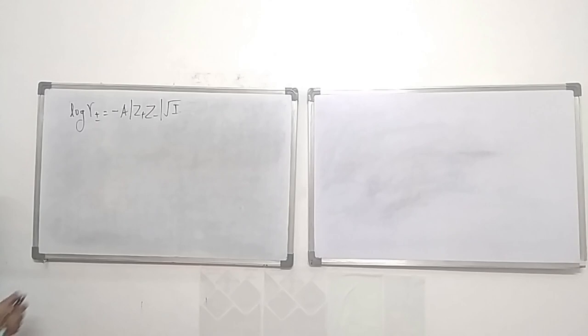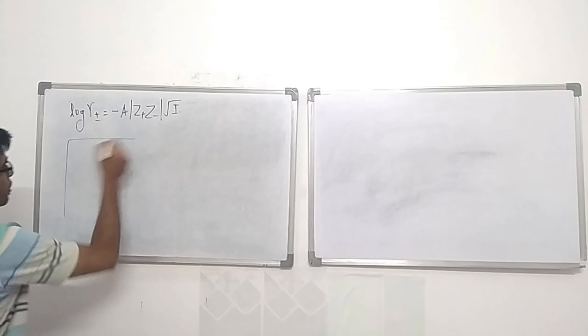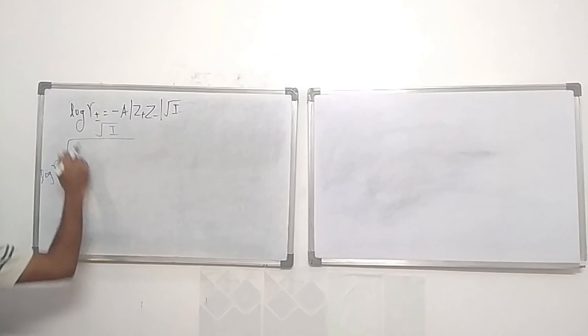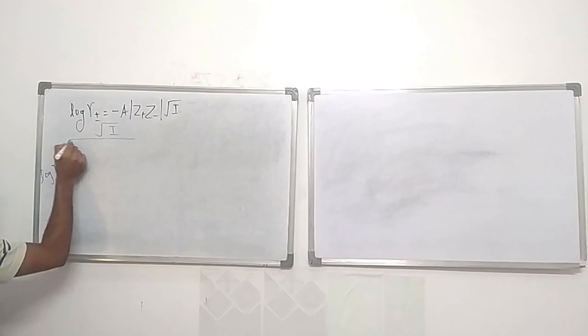Looking at the plot of log γ± versus √I: the slope is negative, so we expect lines with decreasing slopes. We get straight lines with slope equal to A|z₊z₋|. The constant A is fixed, but the product |z₊z₋| is not, so the slope changes depending on the electrolyte type.